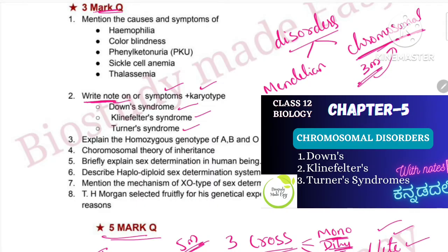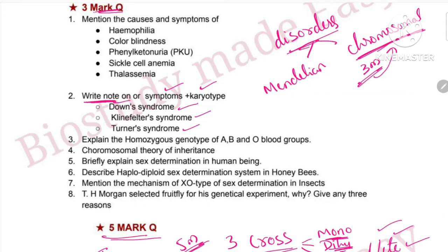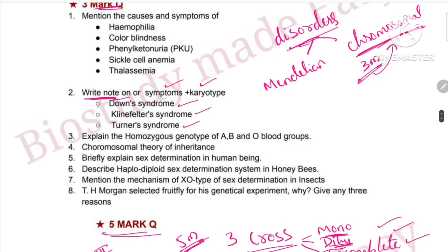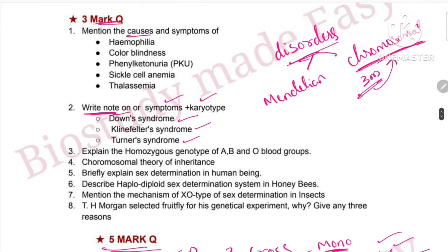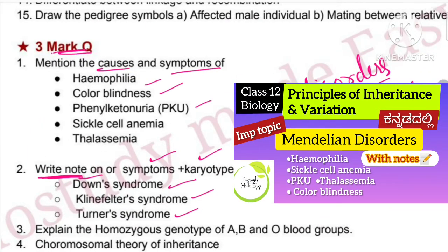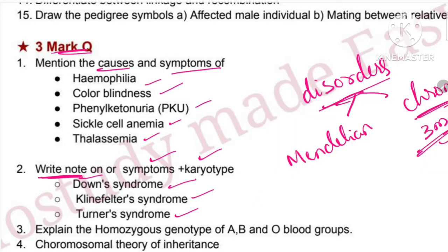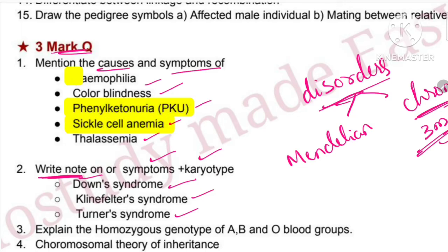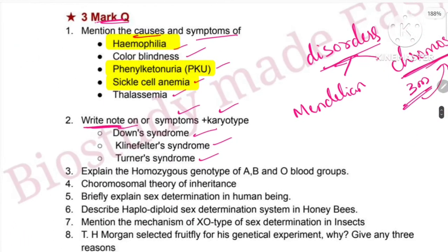Next, for 3-mark questions in this chapter beyond the crosses, an important concept is genetic disorders. Specifically, chromosomal disorders are highly important for 3 marks. Questions like 'write a note on' Down's syndrome, Klinefelter syndrome, and Turner syndrome are expected — you need to write their karyotype and symptoms. For Mendelian disorders, write the cause and symptoms of hemophilia, color blindness, phenylketonuria, sickle cell anemia, and thalassemia. Phenylketonuria and sickle cell anemia are highly important, and hemophilia is very very important.